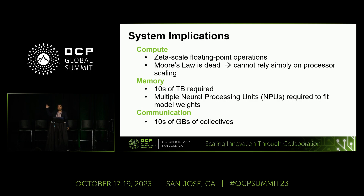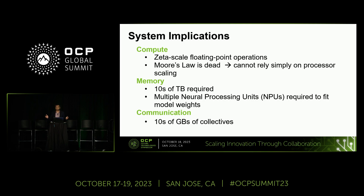This naturally has implications across the system. On the compute side, you need a scale of floating point operations, and since Moore's law has stagnated, we can't simply rely on processor scaling. On the memory side, you need tens of terabytes just to fit the models, requiring multiple devices and multiple neural processing units — GPUs, TPUs, and so on. Once you add data sharding and optimizer state, you need even more memory, and distributed systems lead to tens of gigabytes of collective communication across the system.